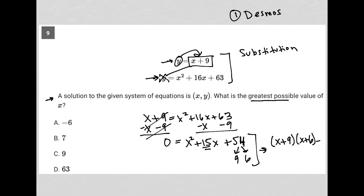And therefore, I can solve for x under both scenarios. x plus 9 equals 0, which would lead to x equals negative 9. And x plus 6 equals 0, which would lead to x equals negative 6.